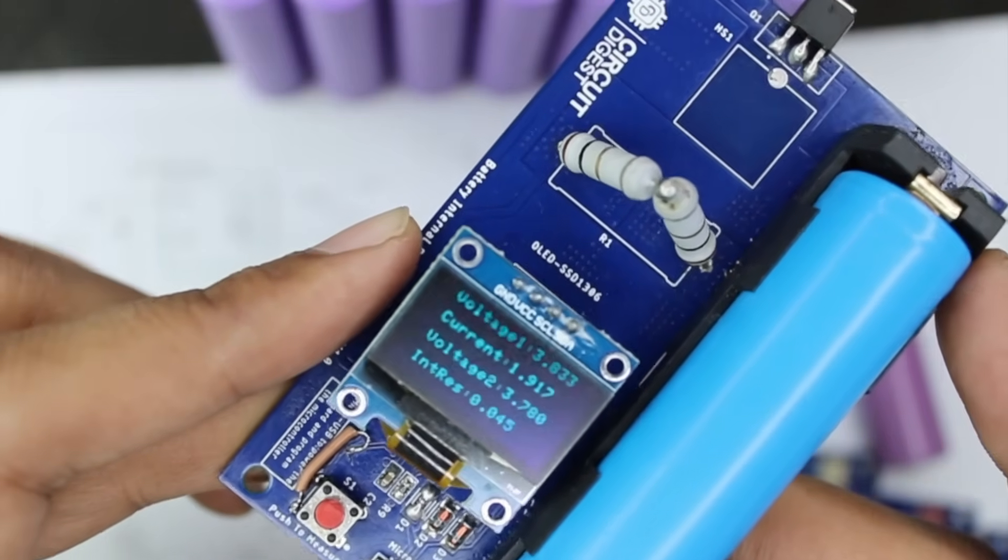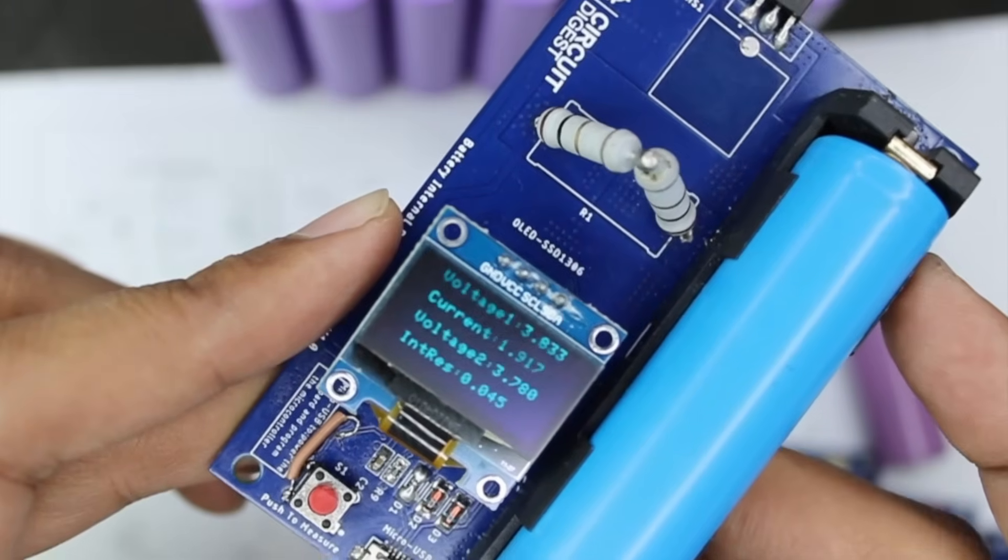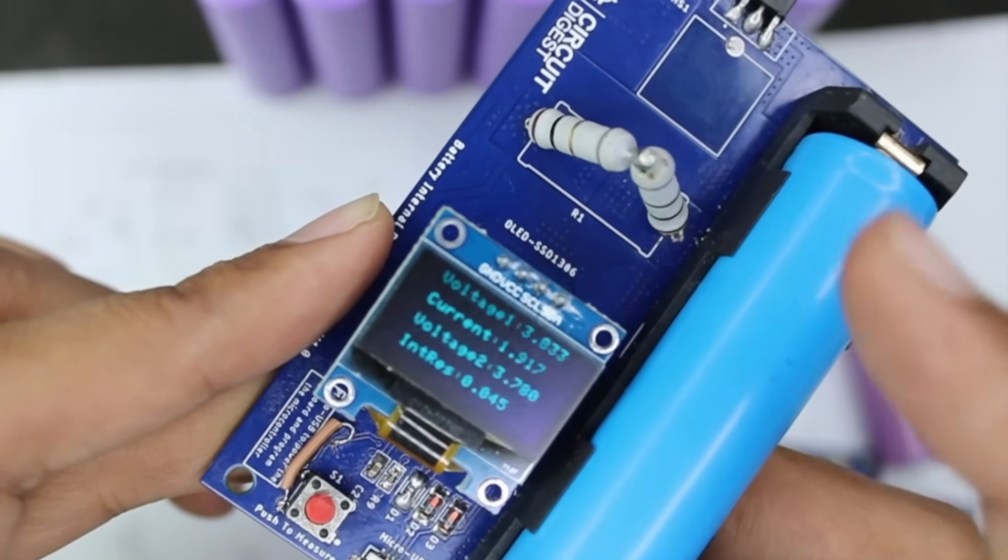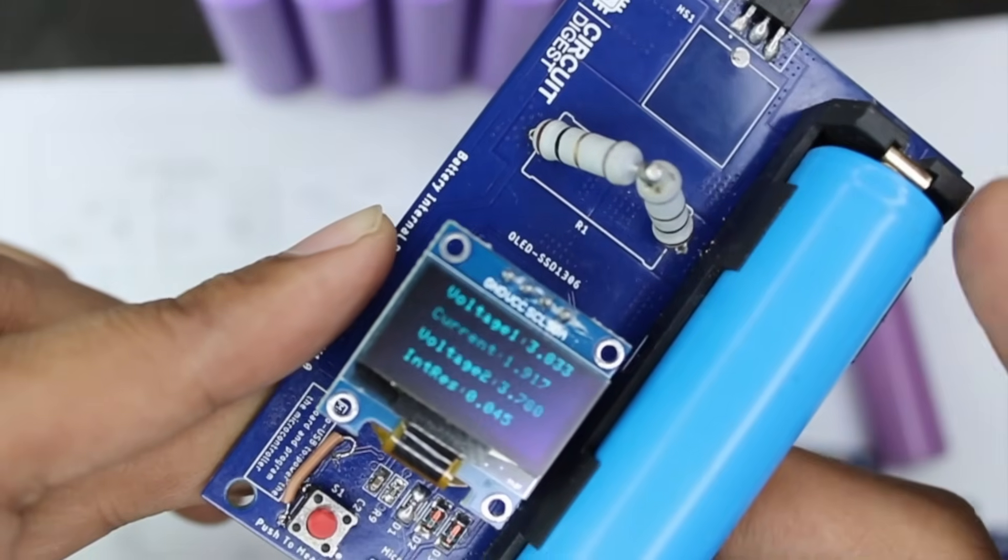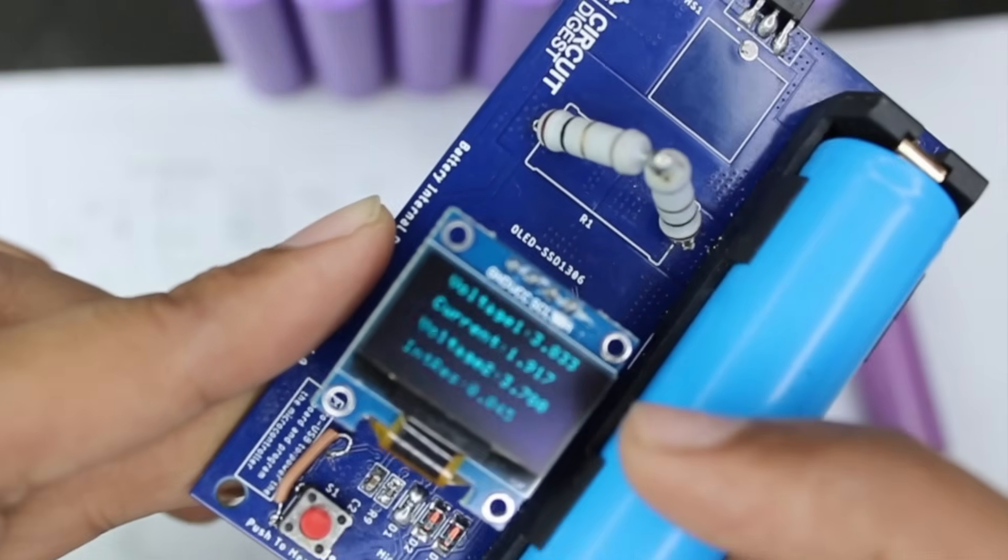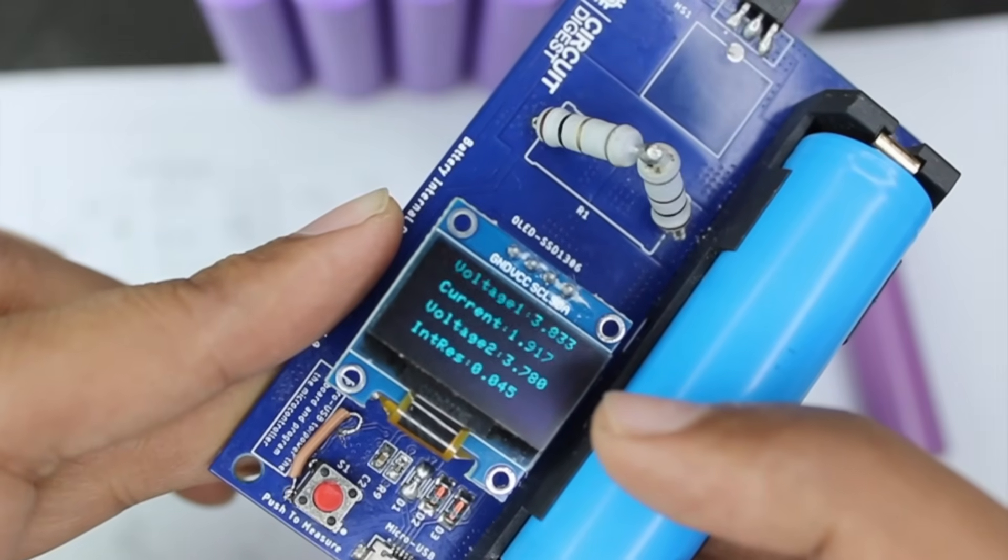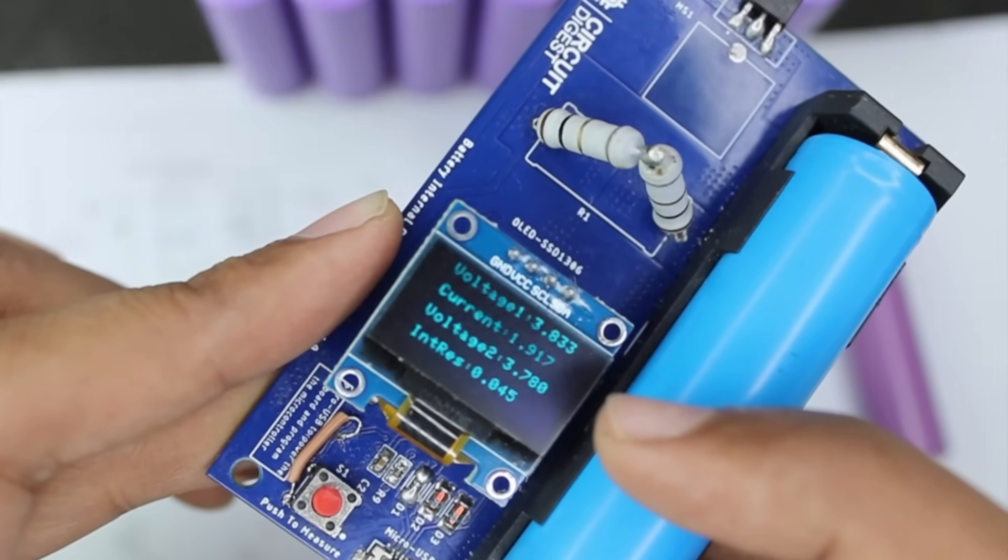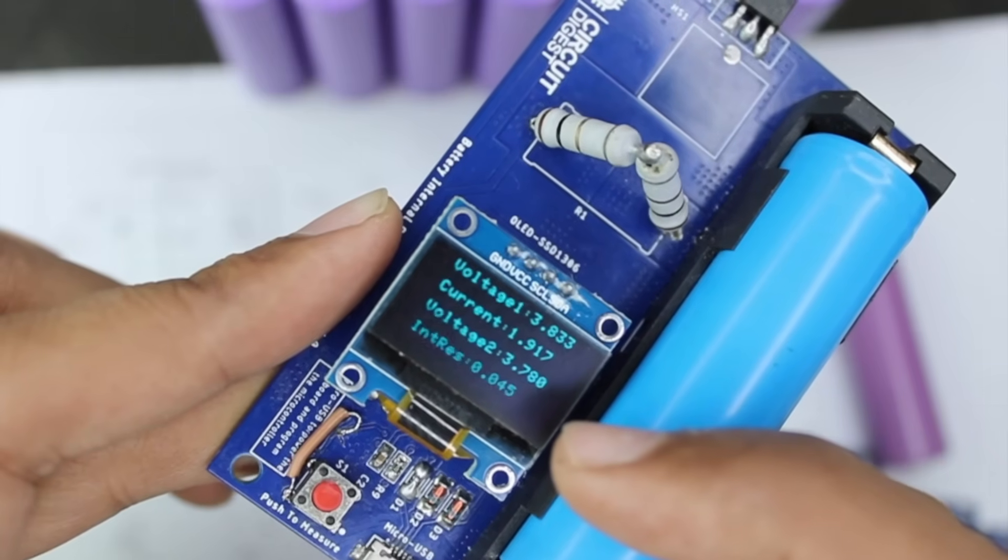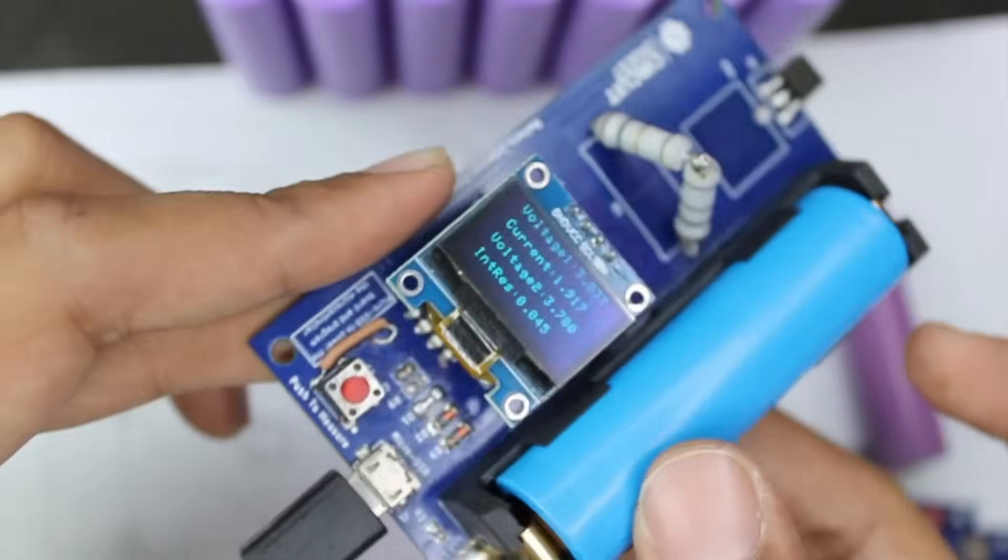The first is the open circuit voltage at 3.833 volts, the second is the current flowing through the load resistor after the MOSFET connects at 1.917 amps, the third is the closed circuit voltage at 3.7 volts, and the last is the calculated internal resistance at 0.45 ohms.